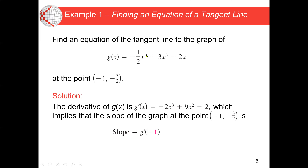Using the power rule: 4 times negative one-half gives negative 2, and we subtract 1 from 4, so the derivative of −½x⁴ is −2x³. Next, 3 times 3 gives 9, and the exponent reduces from 3 to 2, so the derivative of 3x³ is 9x squared. For minus 2x, the exponent is 1, so 1 minus 1 is 0, and 1 times 2 is 2. So the derivative is negative 2.